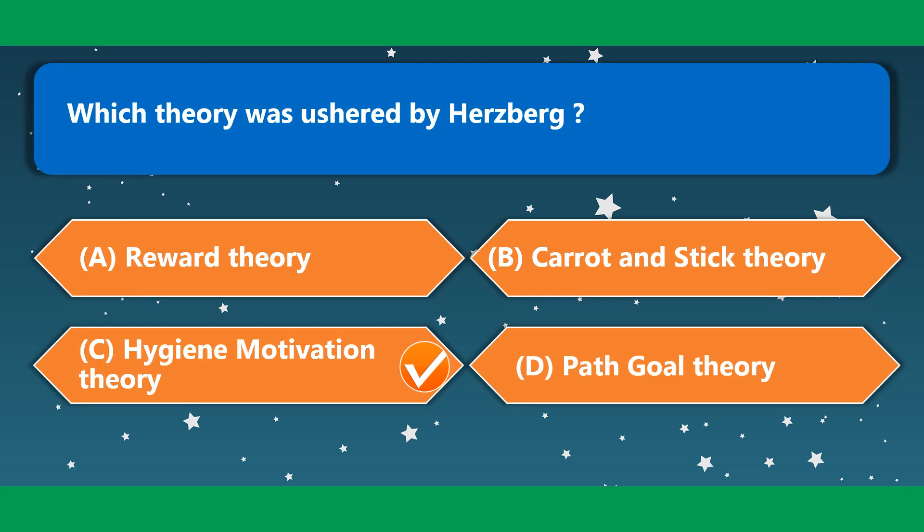Which theory was asserted by Herzberg? The correct option is option C — Hygiene Motivation Theory.